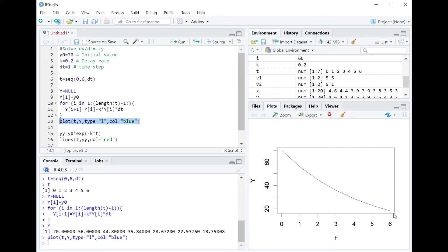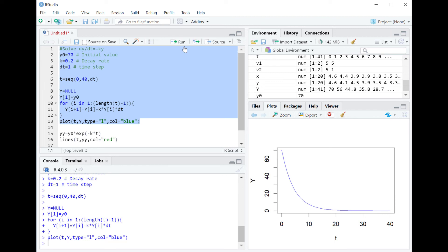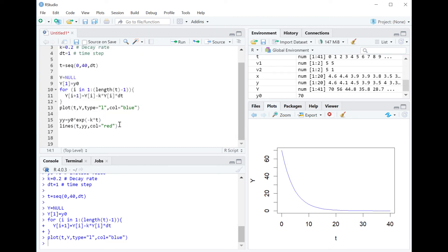But we can, of course, simulate longer than 6 hours. So if we change this to 40, run the whole thing again, we get the curve like this. So now we can compare this numeric solution with the analytic solution, which is this equation that you see here.